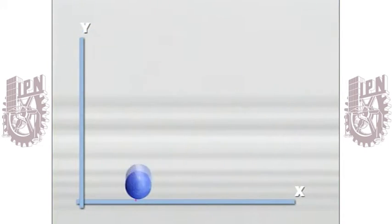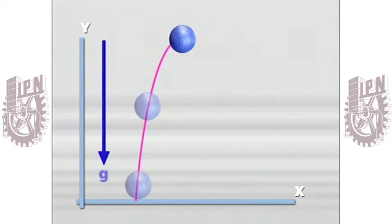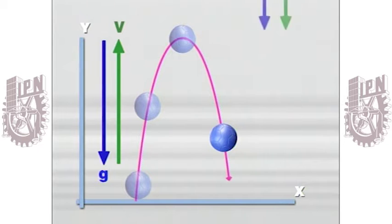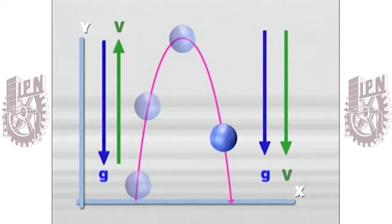Debido a la gravedad, la pelota experimenta una aceleración constante dirigida hacia abajo, que primero reduce la velocidad vertical hacia arriba que tenía al principio y después aumenta su velocidad hacia abajo mientras cae al suelo. La trayectoria de la pelota resulta ser una parábola.